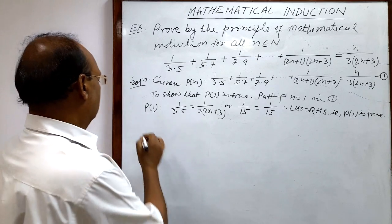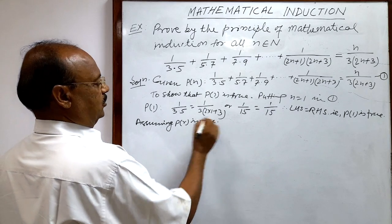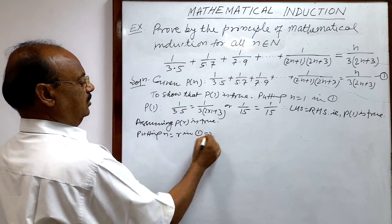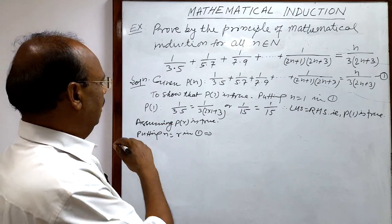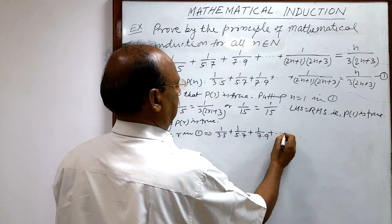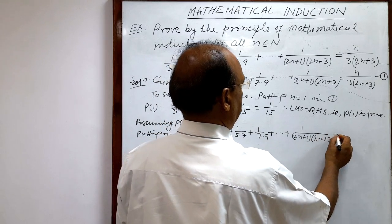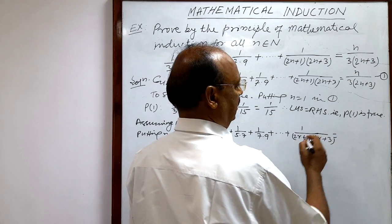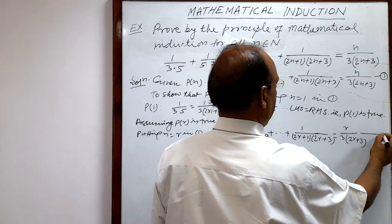Step 2: Assuming that P(r) is true. Putting n=r in relation number 1, we get: 1/(3×5) + 1/(5×7) + 1/(7×9) + ... + 1/((2r+1)(2r+3)) equals r/(3(2r+3)). Let us call this relation number 2.